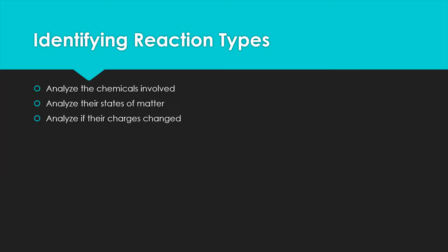To identify the reaction type, we want to analyze the chemicals involved and look at what kind of chemicals we have. We'll look at states of matter because as certain states of matter appear, it'll help us recognize certain reactions happening. We also want to analyze if a chemical has changed charge — whether it's gone from being an individual element to something in a compound or vice versa — because that indicates the type of reaction.